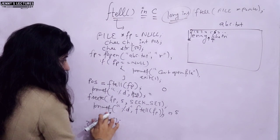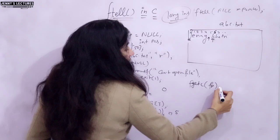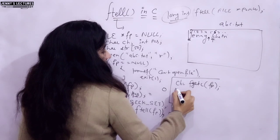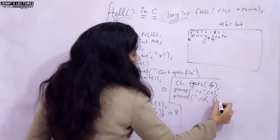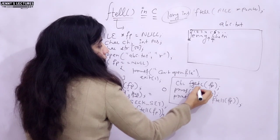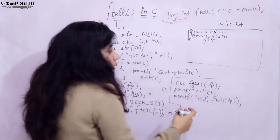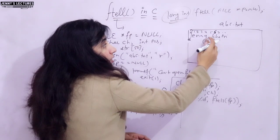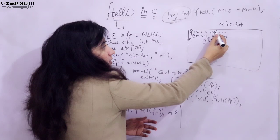Suppose after this printf I write fgetc(fp) to read a single character and store it in ch, then print it with printf using %c. After that, I again print the file position with printf and ftell. Right now the file pointer is at the space character, so fgetc will print the space, and the file pointer moves one position forward to index 6. So ftell will print 6.